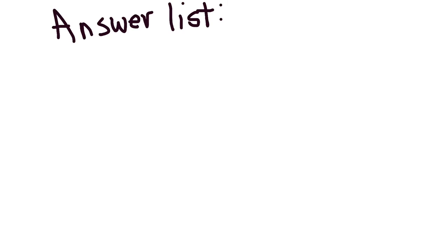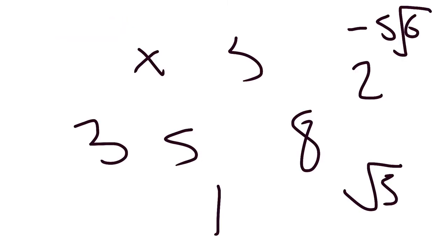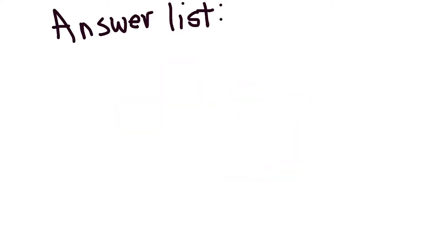First, we're going to start by adding an answer list, because there's going to be multiple answers and then we're going to pin them down to one singular answer. So we can add different answers and then quickly combine them into one singular answer to get the definitive answer of what zero divided by zero equals.